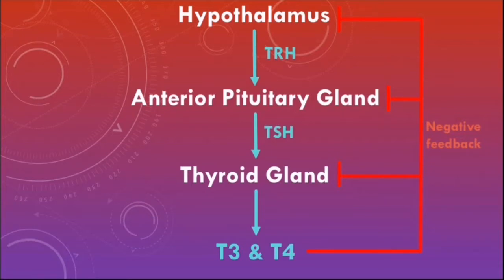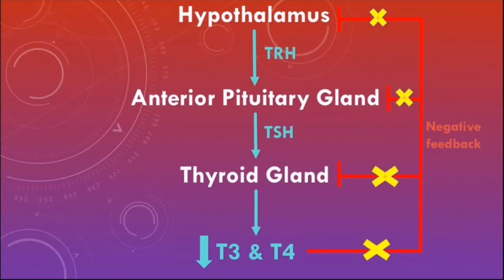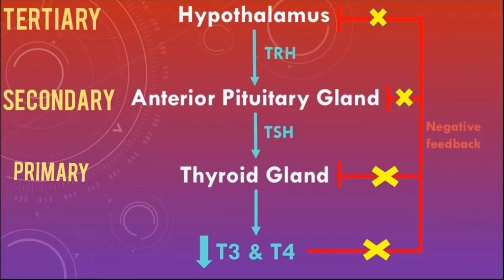Hypothyroidism is characterized by low levels of T3 and T4 being produced. It's important to note that low levels of T3 and T4 in the blood means there will be less negative feedback on the axis. Hypothyroidism can be divided into primary, secondary, and tertiary hypothyroidism based on the level at which this axis is affected.